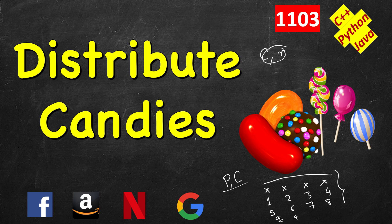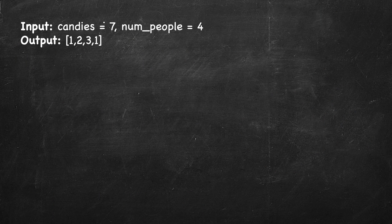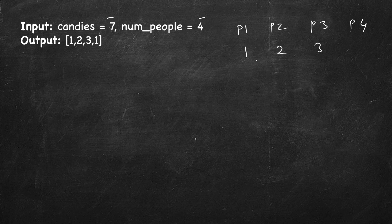The result vector will contain values like nine, five, four, fifteen, twelve, ten, and twelve — showing how many candies each person got. For example, with seven candies and four persons: person one gets one candy, person two gets two, person three gets three, and only one candy is remaining so person four gets one. If there were more iterations, values would have been added up.